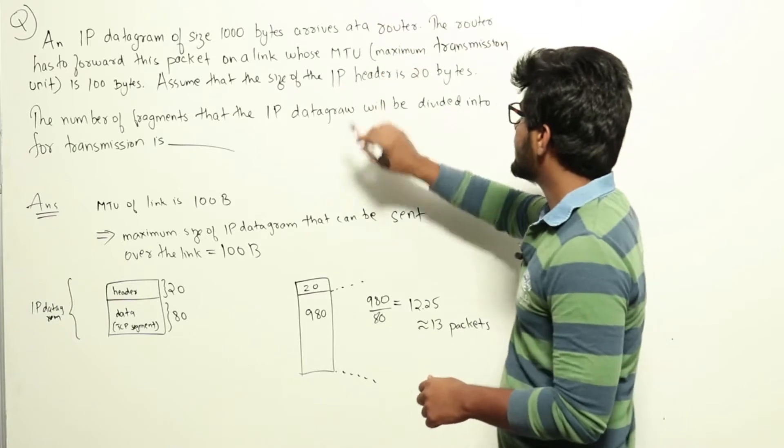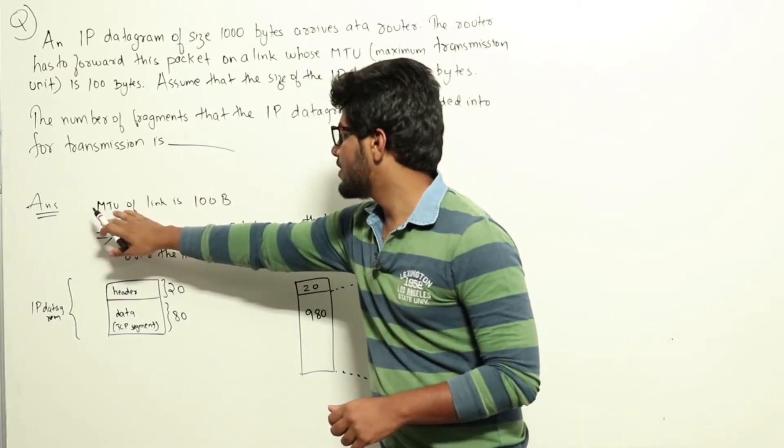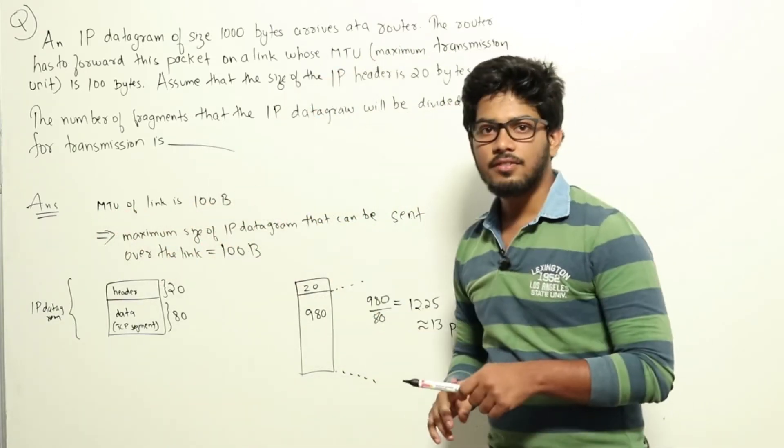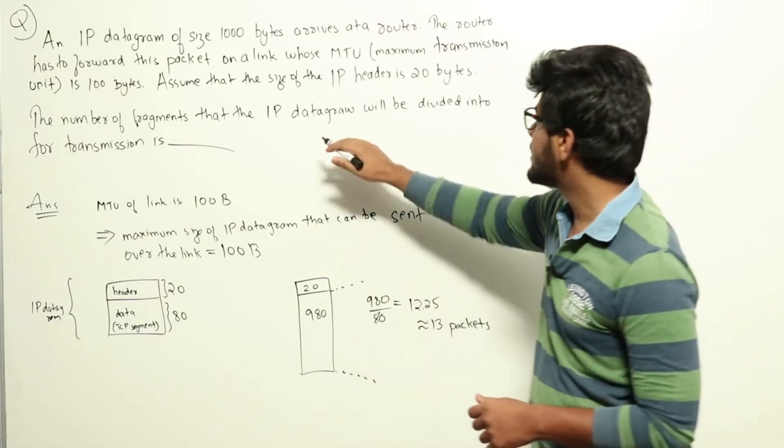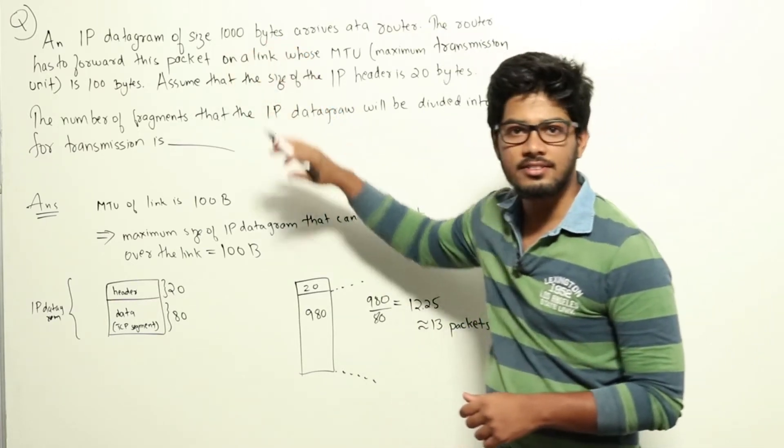In this question, they have given that the maximum transmission unit of the link is 100 bytes, which means that over the link, initially a packet of size 1000 bytes arrives at the router.